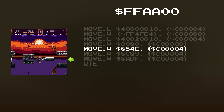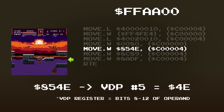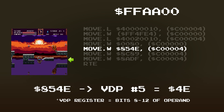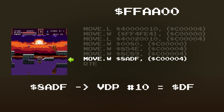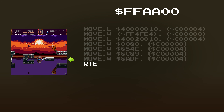The fifth instruction is responsible for changing the location of the SAT from 0xA800 to 0x9C00. The sixth instruction enables the shadow and highlight mode, which is what makes the reflection look darker than the rest of the level. Then the seventh instruction writes hex DF to the horizontal interrupt timer, which effectively disables horizontal interrupts until the next frame of execution. The last instruction just returns from the interrupt, and normal execution resumes after this.